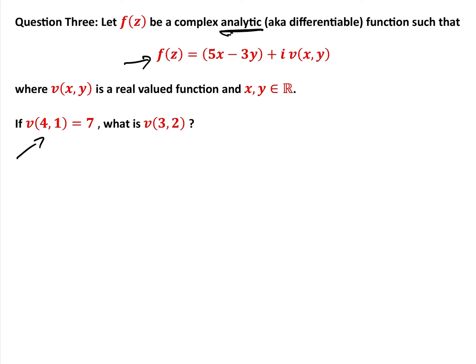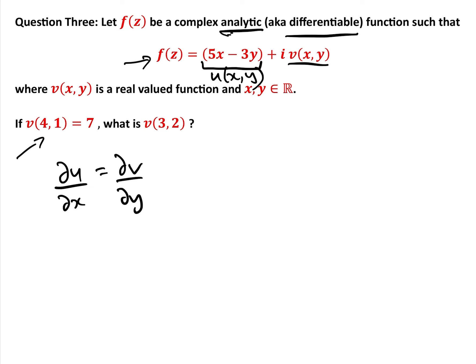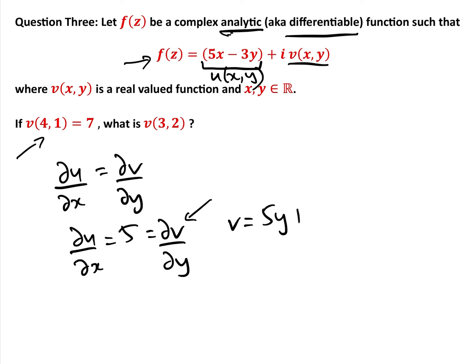Since f is analytic, the Cauchy-Riemann equations hold. Here u(x,y) = 5x - 3y and v(x,y) is what we want to find. From the first equation: ∂u/∂x = 5, so ∂v/∂y = 5. Integrating with respect to y gives v = 5y + h(x), where h(x) is some function of x.